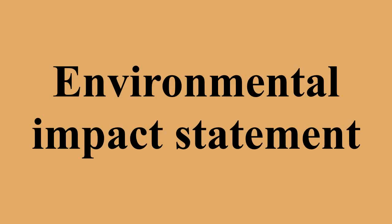Draft EIS: Based on both agency expertise and issues raised by the public, the agency prepares a draft EIS with the full description of the affected environment, a reasonable range of alternatives, and an analysis of the impacts of each alternative. Comment: Affected individuals then have the opportunity to provide feedback through written and public hearing statements. Final EIS and Proposed Action: Based on the comments on the draft EIS, the agency writes a final EIS and announces its proposed action. The public is not invited to comment on this, but if they are still unhappy or feel that the agency has missed a major issue, they may protest the EIS to the director of the agency. The director may either ask the agency to revise the EIS or explain to the protester why the complaints are not actually taken care of.